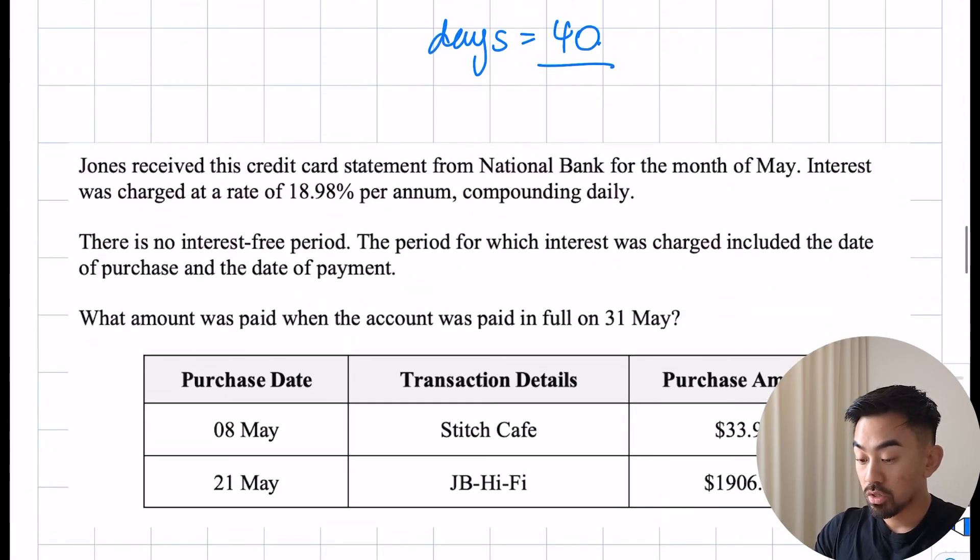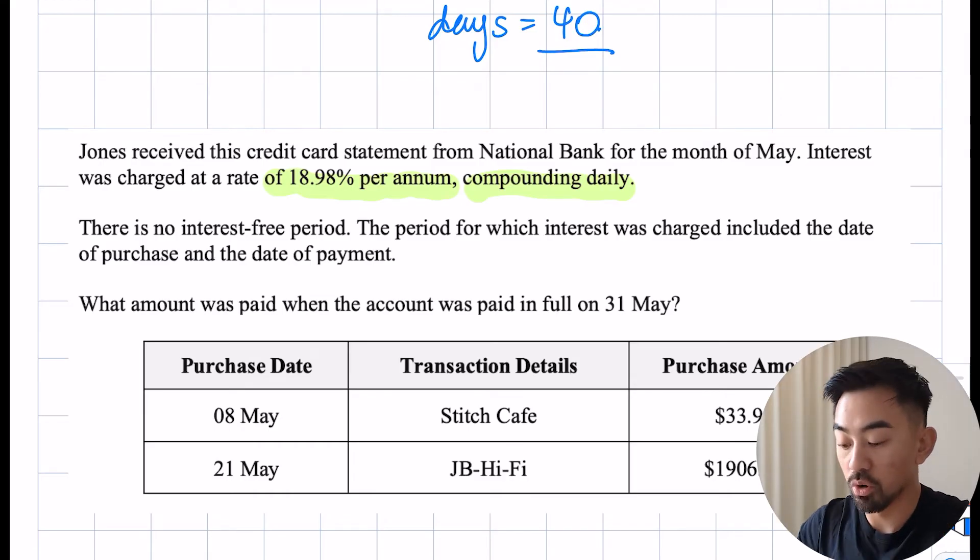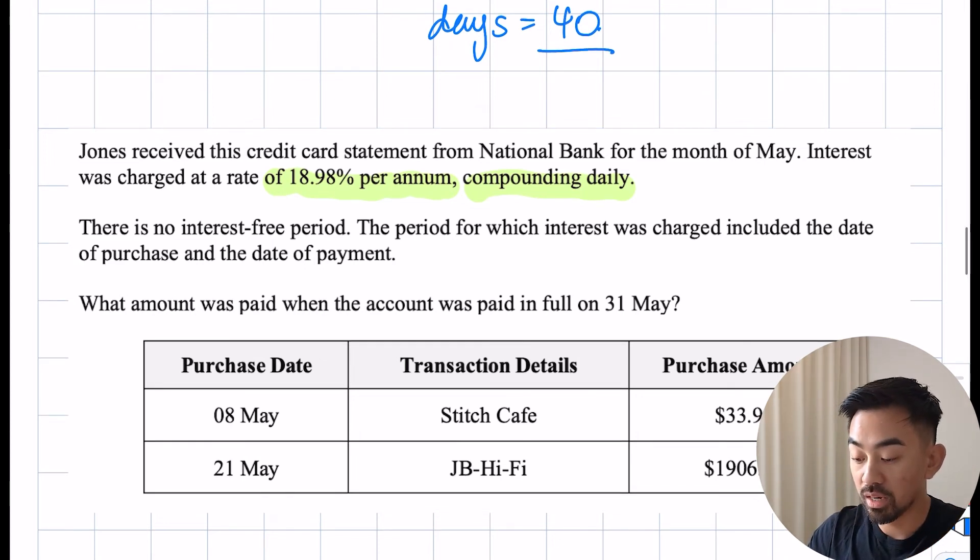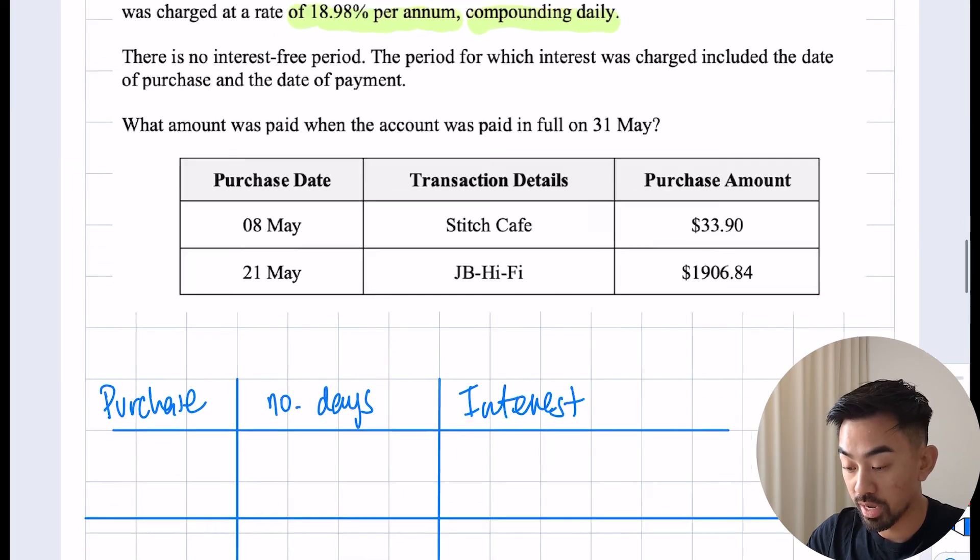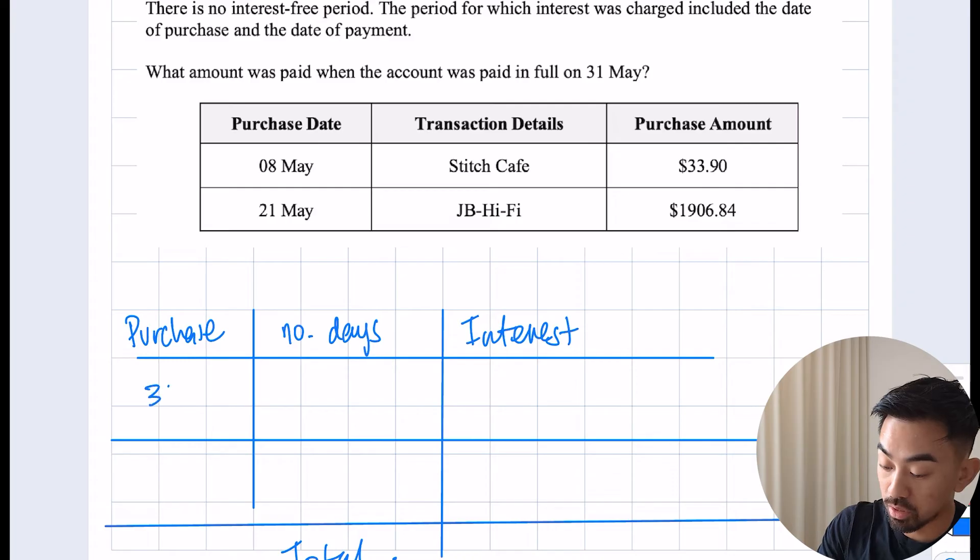Jones received a credit card statement from National Bank for the month of May. Interest was charged at a rate of 18.98% per annum, compounded daily. There is no interest-free period, and the period for which interest was charged included the day of purchase and day of payment. Similar to the question before, we're going to have to add one day, but also it's going to be compound and not simple interest. Once again, if there's more than one purchase, I like to draw a table. I'm going to fill in this information: the first purchase is $33.90 and the second one is $1906.84.